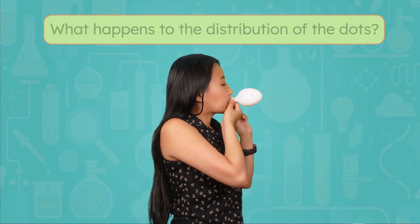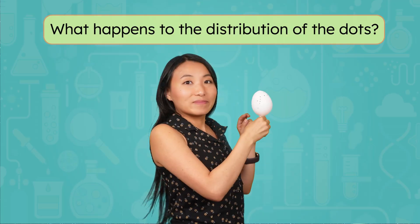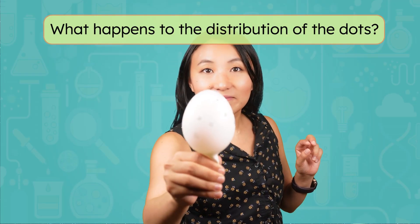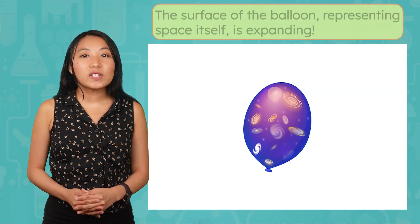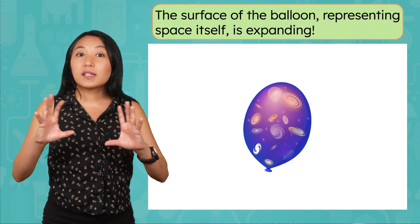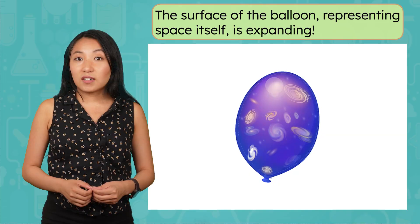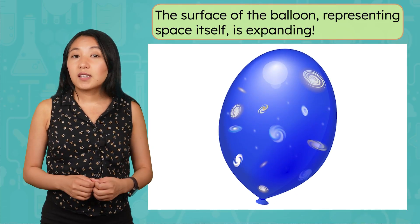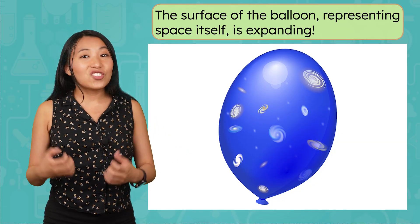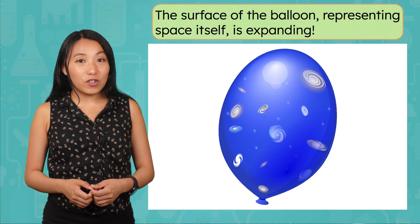Now slowly begin to blow up the balloon. As it inflates, watch what happens to the distribution of the dots. You should see them moving farther apart from one another. That's because the surface of the balloon, representing space itself, is expanding. The dots aren't pushing away from each other on their own. Instead, the space between them is stretching, just like what's happening in our universe.